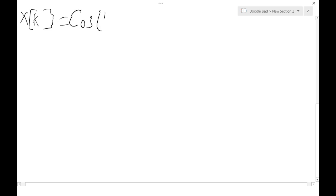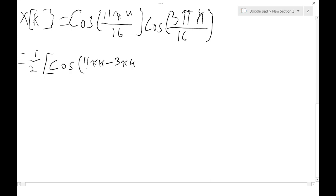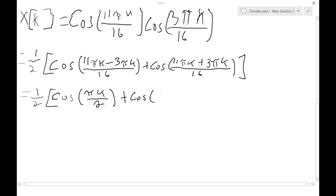So let's first look at x of k. We have the product of two cosines, which we can simplify down to the sum of two cosines. The first cosine being the sum of the inside angles, and the second cosine being the difference of the two inside angles. So we get that x of k is equal to one-half times the quantity of cosine of pi times k divided by 2 plus cosine of 7 pi k divided by 8.